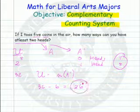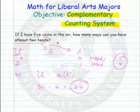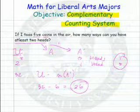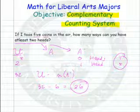So there are the ways that it could happen. 26 ways I could get at least two heads out of five coins being tossed. Hope this helps you with the complementary counting system, and as always, have a very happy day.